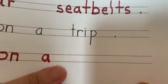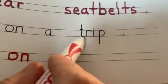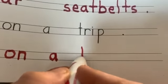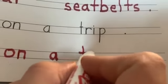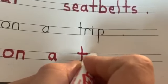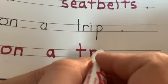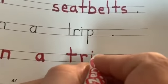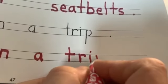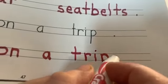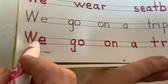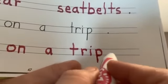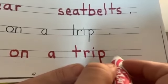Our last word of the sentence is trip. T-R-I-P. T — big line down, cross in the middle. R — little line down, back up, and over. I — little line down, dot on the top. P — big line down, back up, over, around, and bump your line. Let's read our sentence: we go on a trip. At the end of the sentence we have to put punctuation. This has a period because we said a statement.